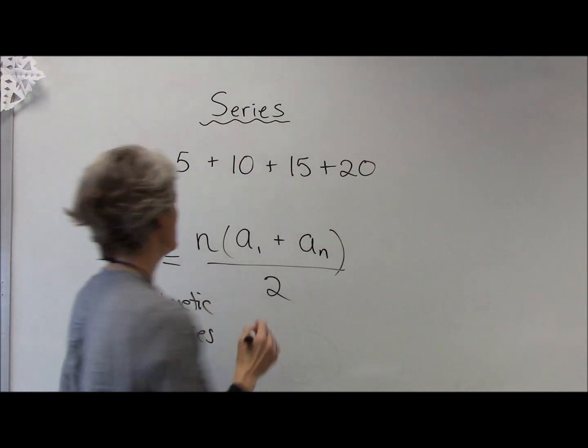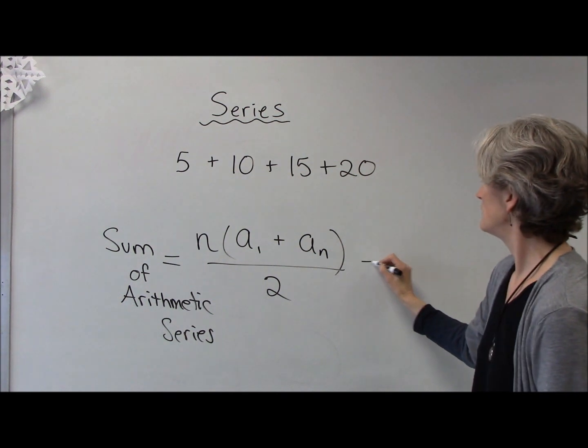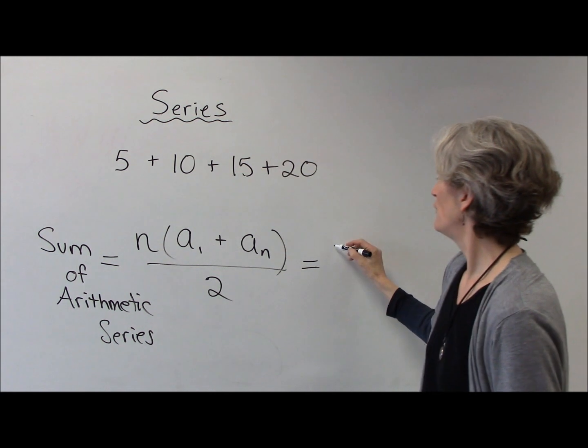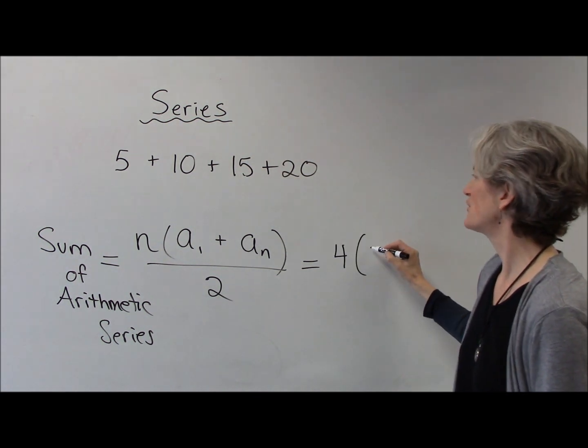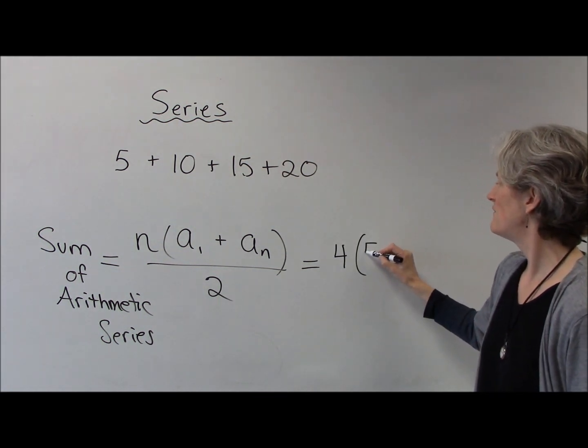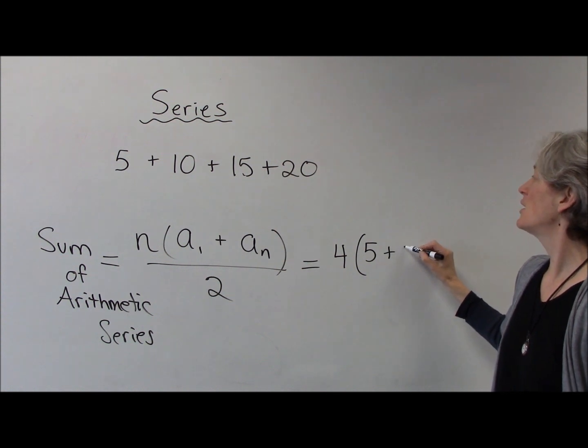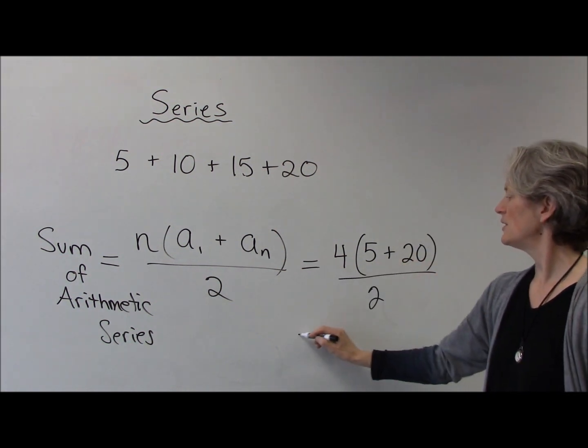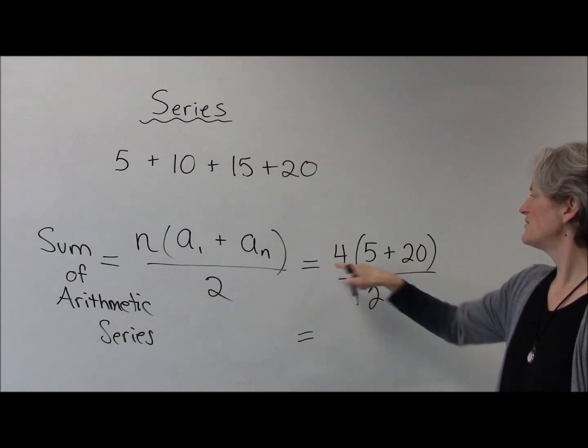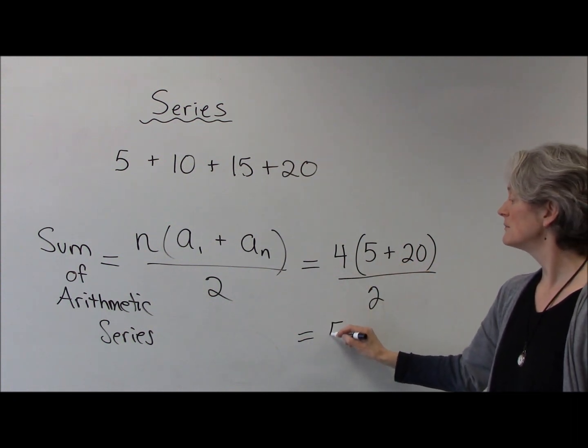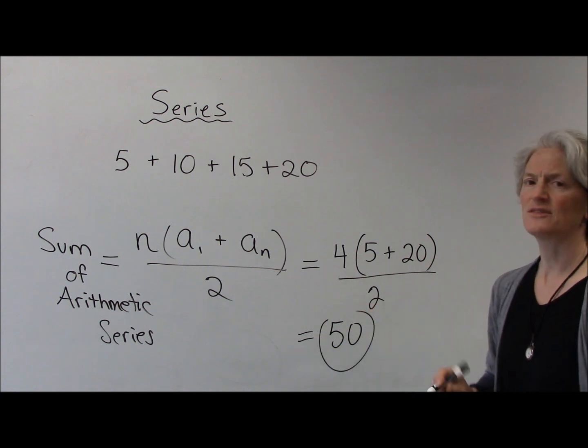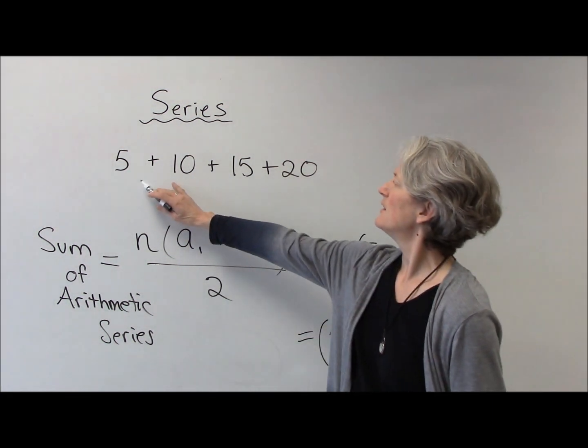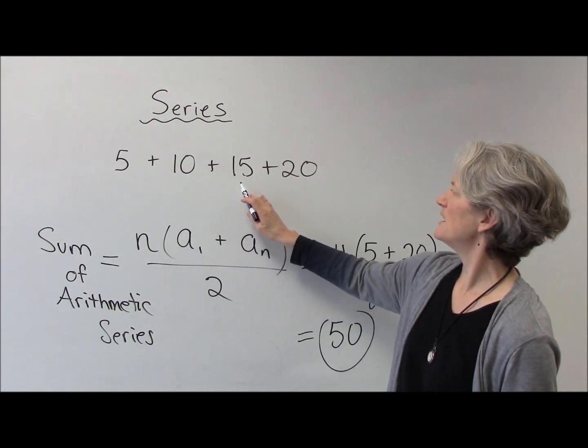All right, here we go. How many terms do I have? That's four terms. My first term is 5, my last term is 20, and I'm going to divide by two. So let's see, that gives me 25 times 4, which is 100, divided by 2. This should have a sum of 50.